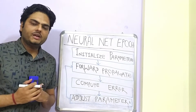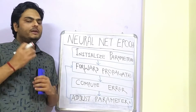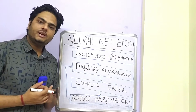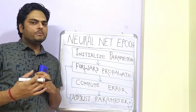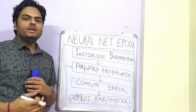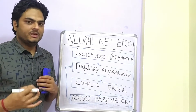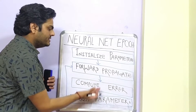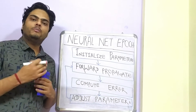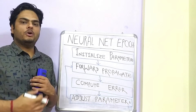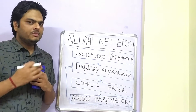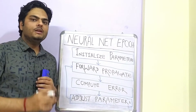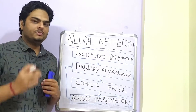But do we really understand the internal mathematics of all these steps? Do we really understand what happens inside the network when an epoch is getting completed? Do we understand how the errors are getting adjusted and how the weights and biases are being optimized? That is what we will discuss in this video with an example, numbers, and a neural network.